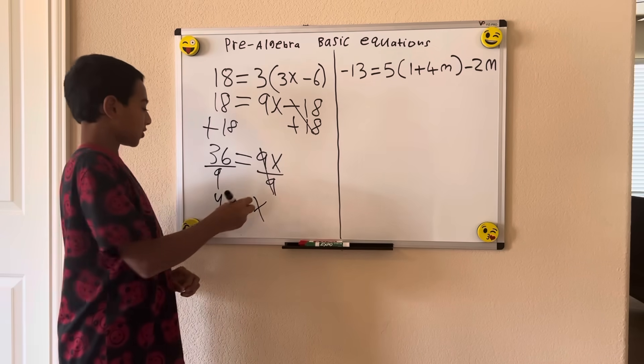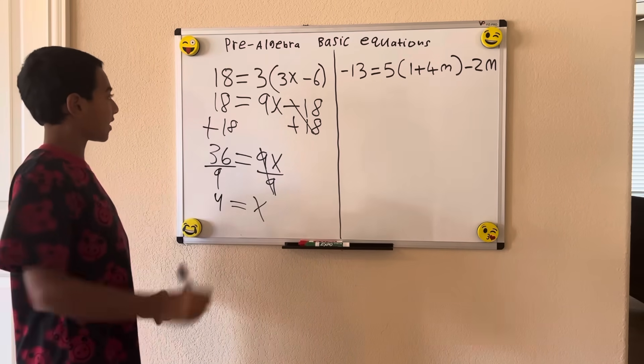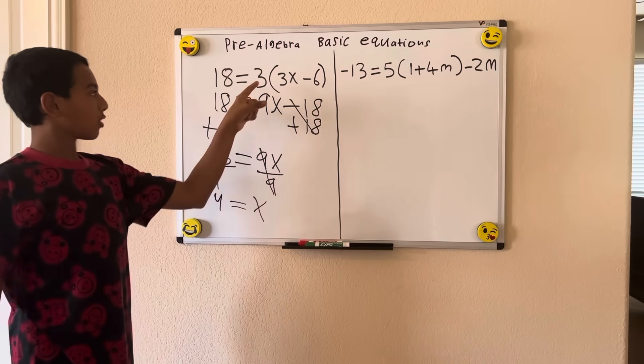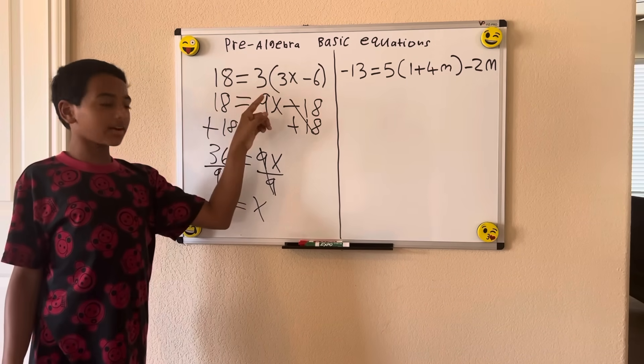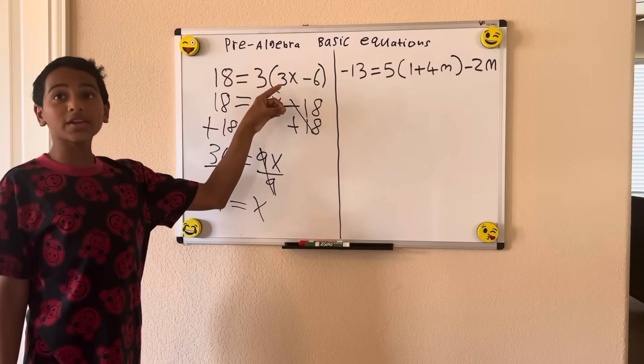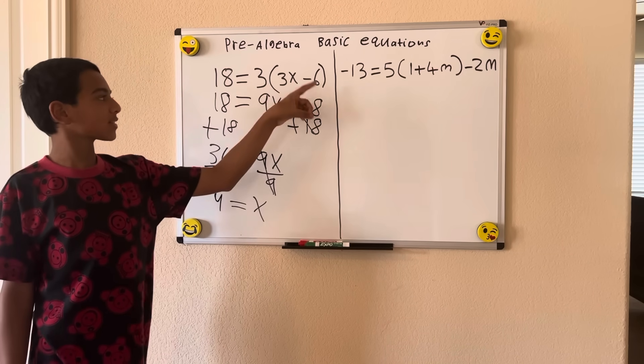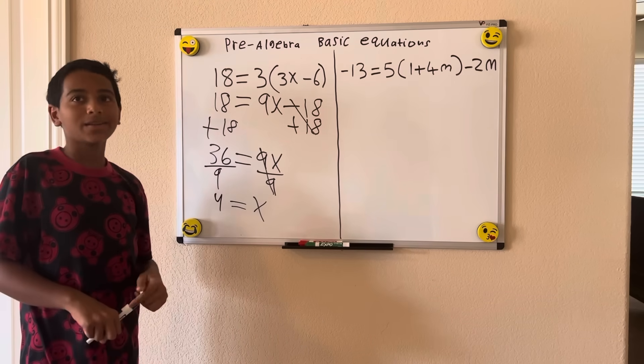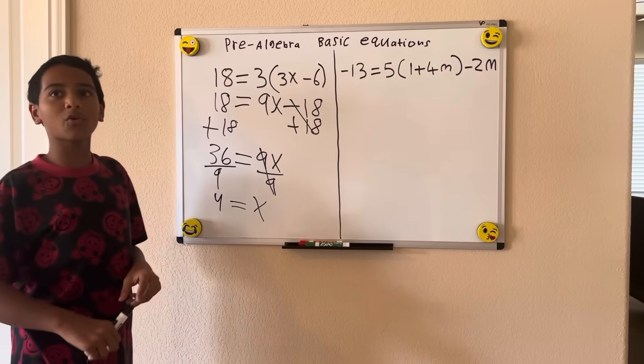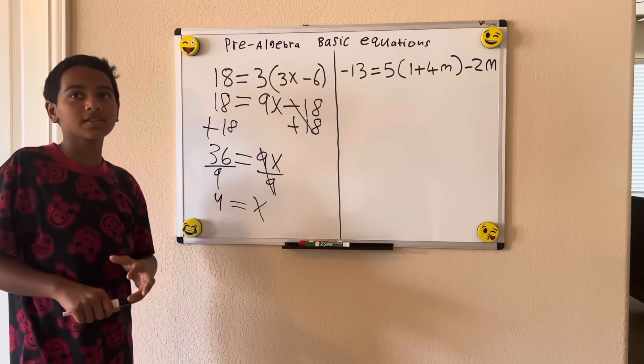Now, to substitute x and see if it makes sense. Substituting 4 for x, we have 18 equals 3 times, 3 times 4 is 12, and 12 minus 6 is 6. So 6 times 3 is indeed 18. So x equals 4 is our only solution in this equation.